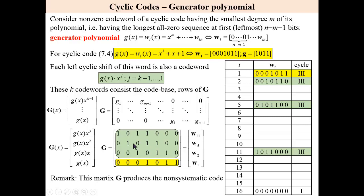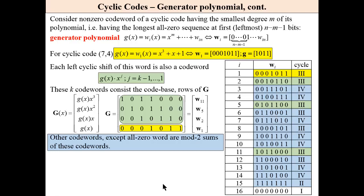This generator matrix produces the non-systematic code, obviously. Then, other codewords, except all zero words, are modular to sums of code base words. It is very well known property of linear codes described by the generator matrix.